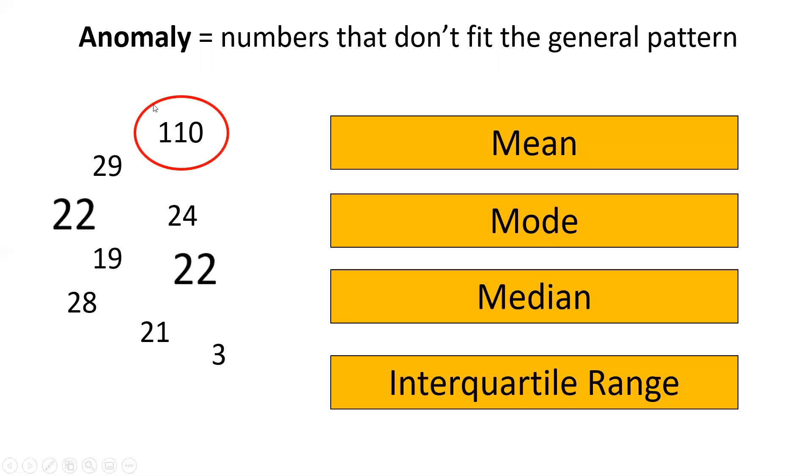110 is much much higher than the other data and 3 is much much lower than the other data. When we want to get rid of these anomalies and find the average number in here, we normally use the median or the interquartile range. They're the two that we use to get rid of anomalies. If you have no anomalies, use the mean or the mode.